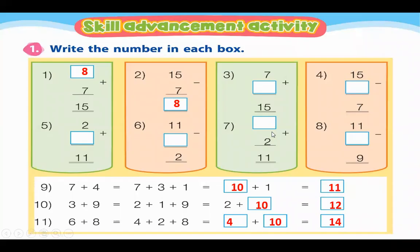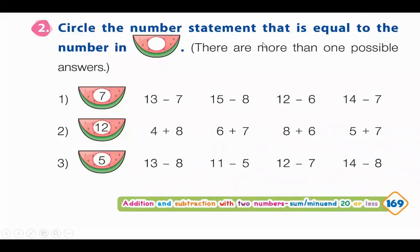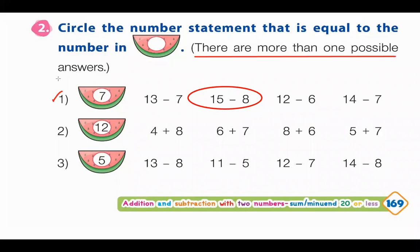Now let's go to the next page, page 169. Circle the number statement that is equal to the number shown in the watermelon. There are more than one possible answer. So for example, number 1: 15 minus 8 is 7. There are more than one possible answers, so you have to circle more than one.